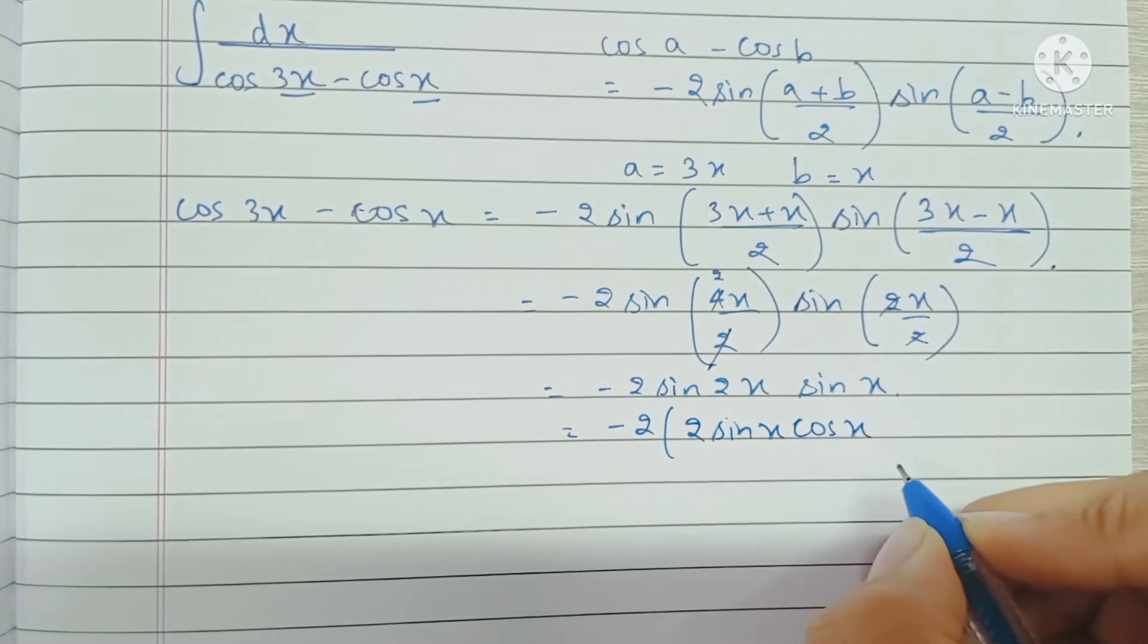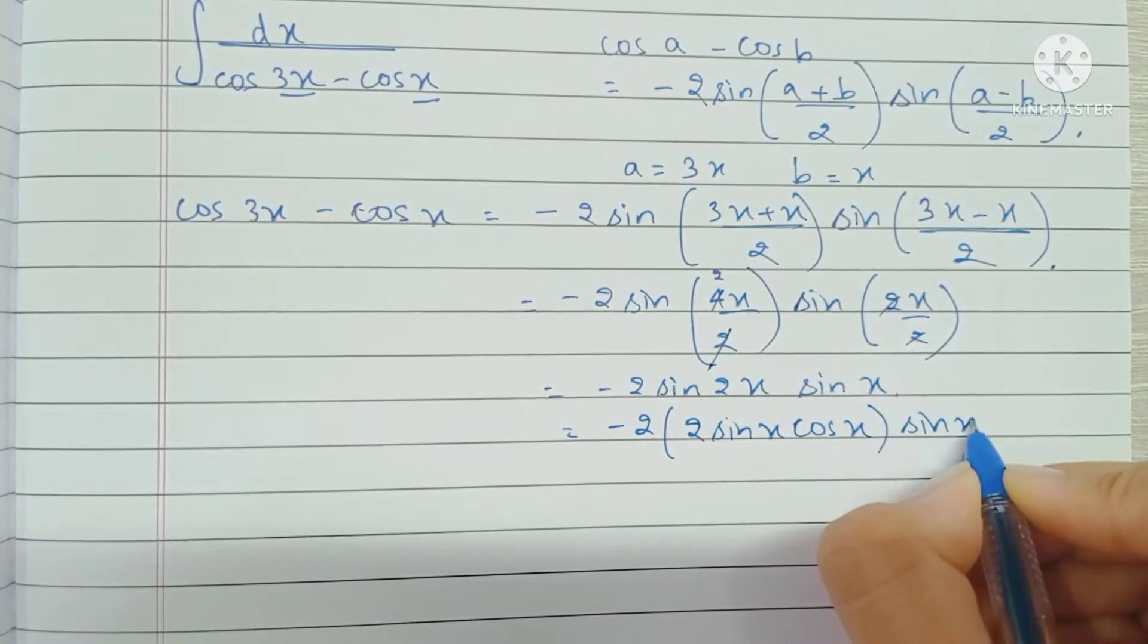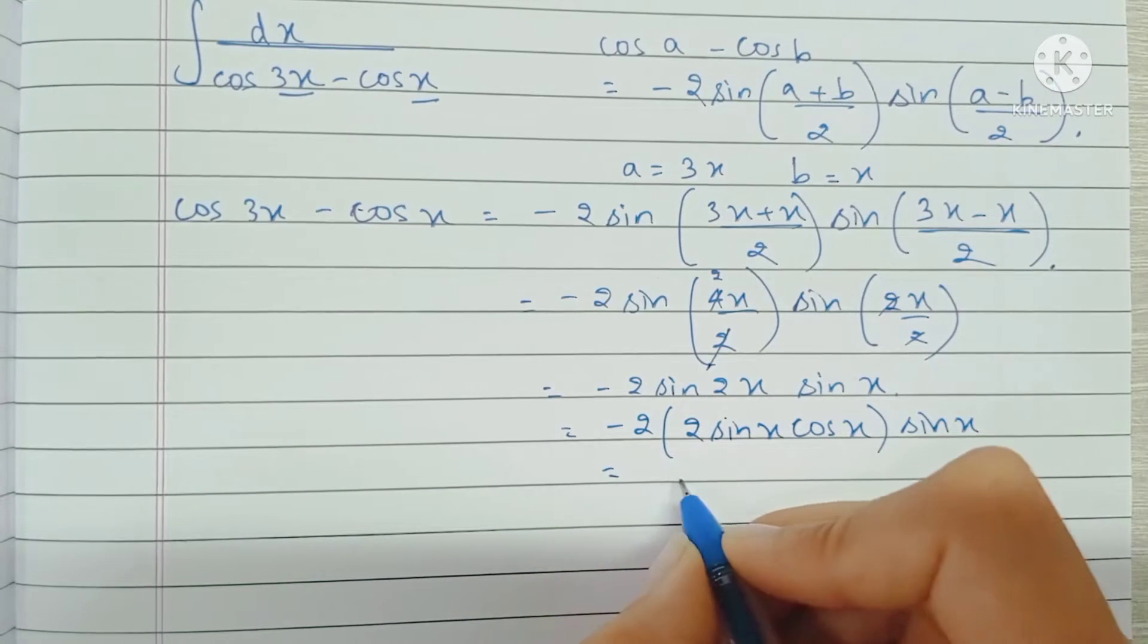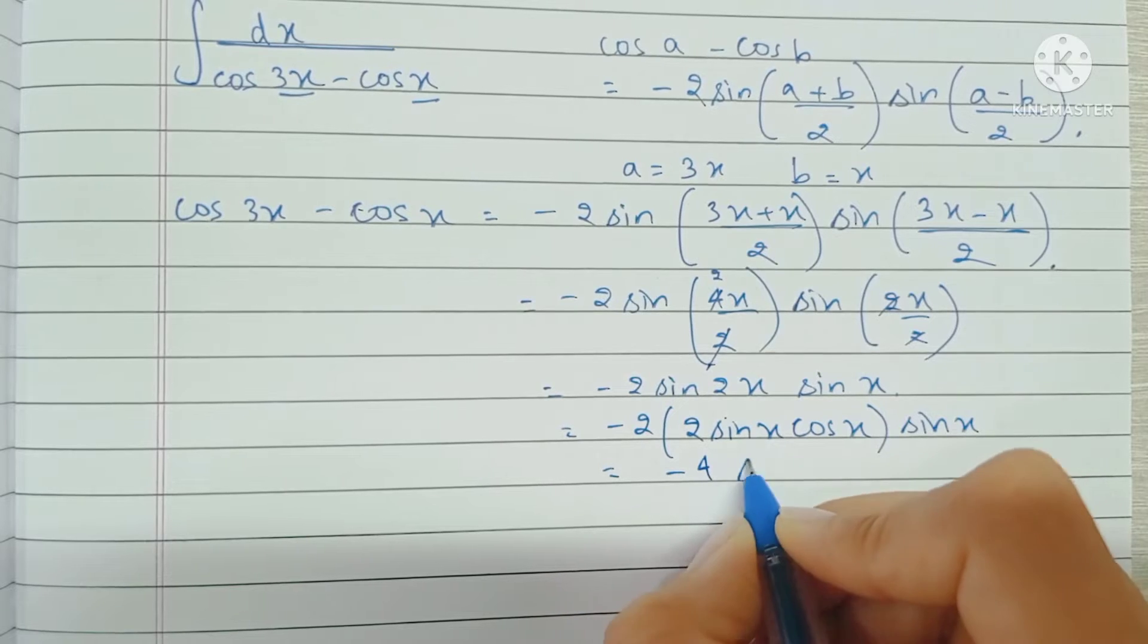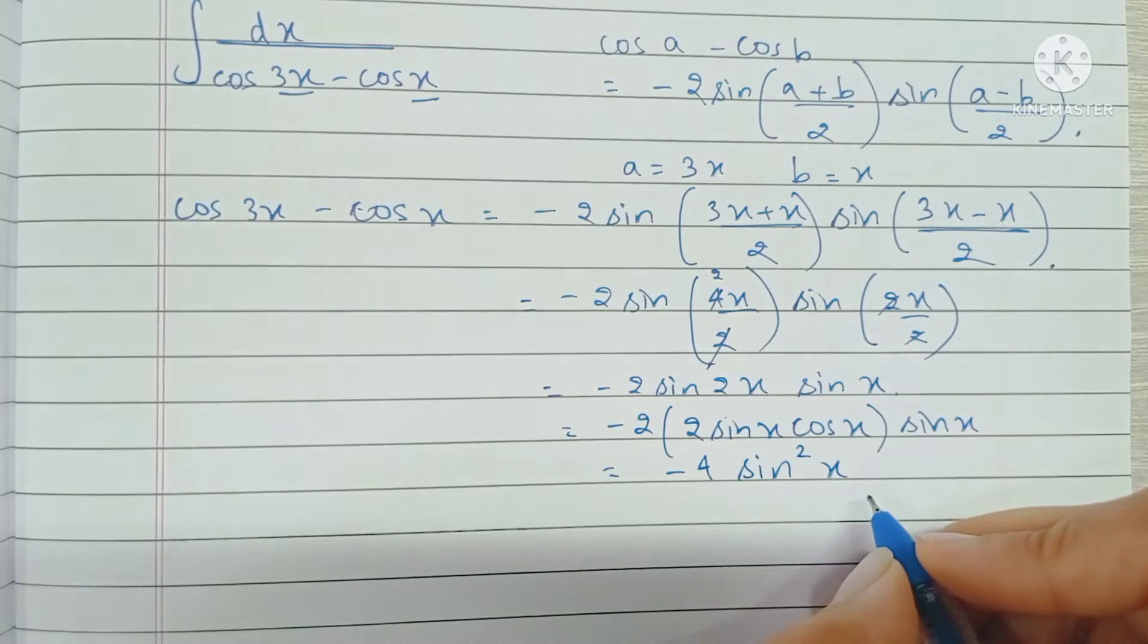So this becomes 2 sine x cos x. Finally, we have minus 4 sine squared x, because this gets multiplied with this. So we have minus 4 sine squared x cos x.